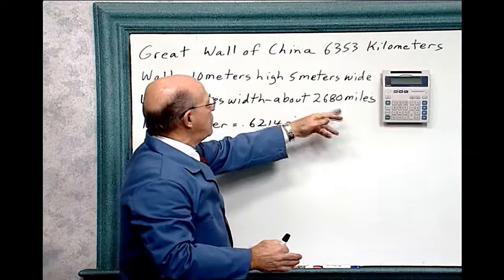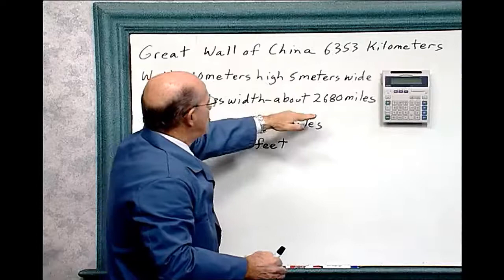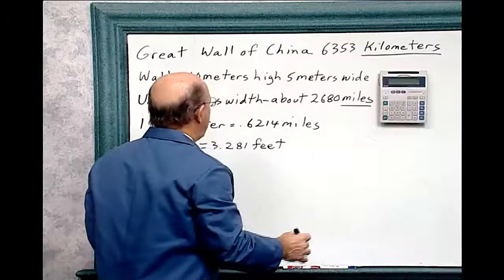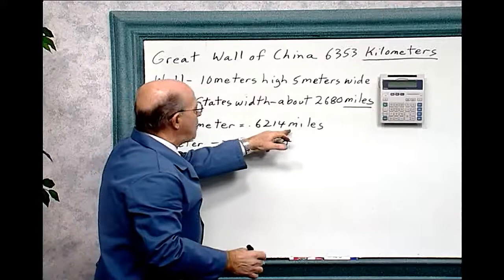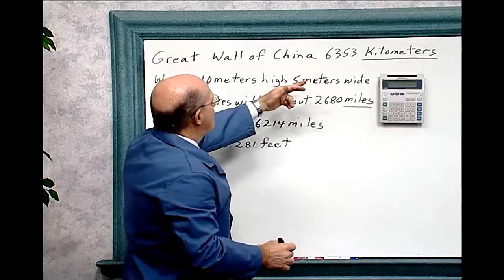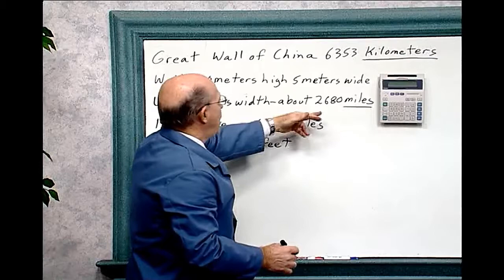So we want to compare the length of that wall of China to the United States, but this is in miles and this is in kilometers. Now, one kilometer equals 0.6214 miles. So we have to convert the kilometers into miles, or we can convert the United States into kilometers, but we'll convert the kilometers into miles because we usually think of miles here in the United States.